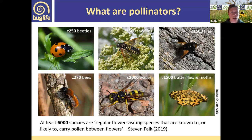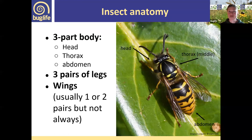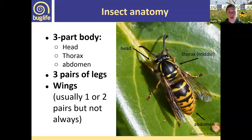Just a few anatomy basics to start with. Insects have three parts to the body: a head, a thorax — the middle part — and an abdomen. They have three pairs of legs and usually one or two pairs of wings, but not always. As I'll say throughout this evening, there are always exceptions.